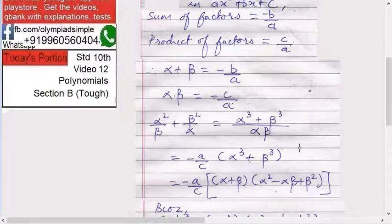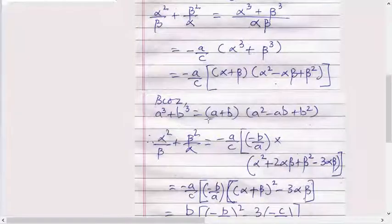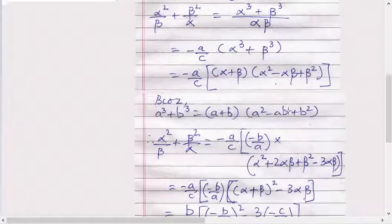Now what is a³ - b³? The formula is (a - b)(a² - ab + b²). So put the values: -a/c × (alpha + beta) × (alpha² - alpha×beta + beta²).